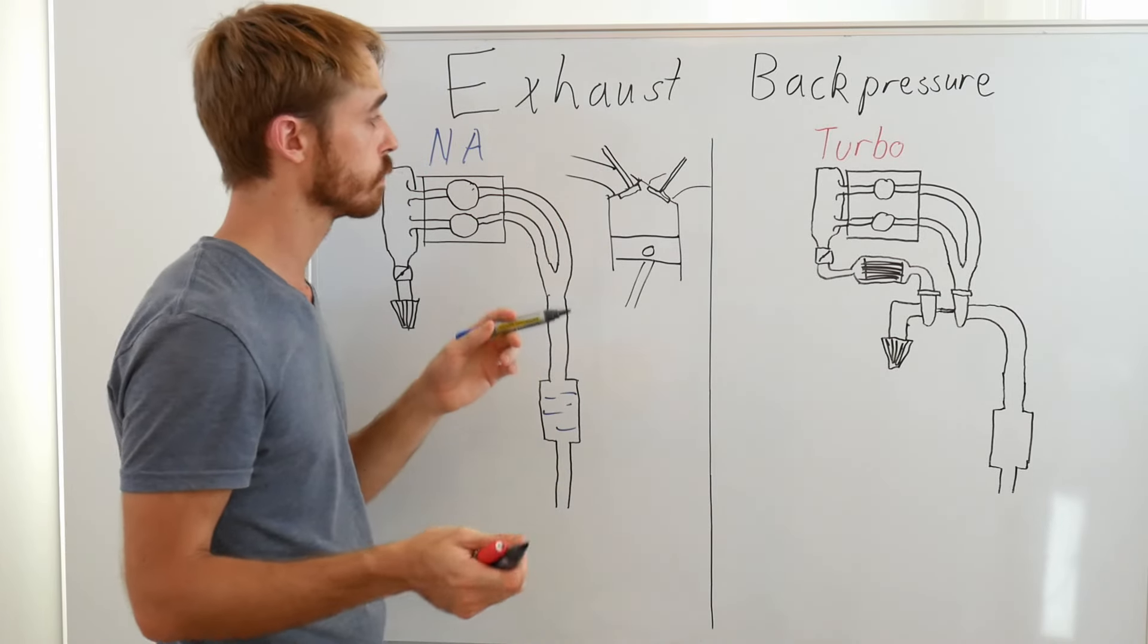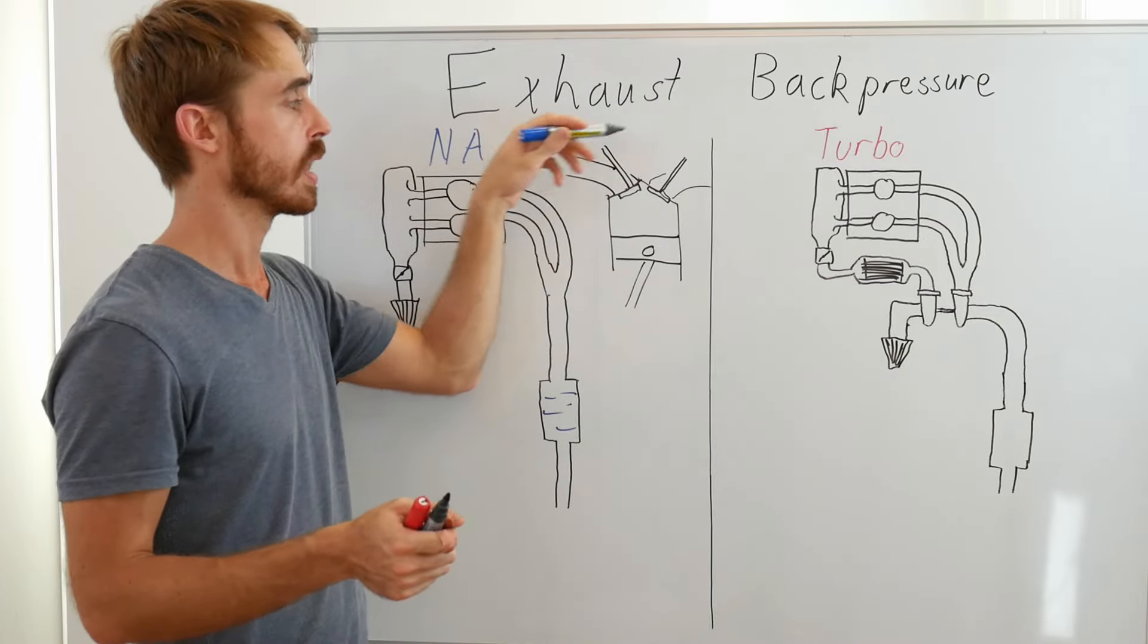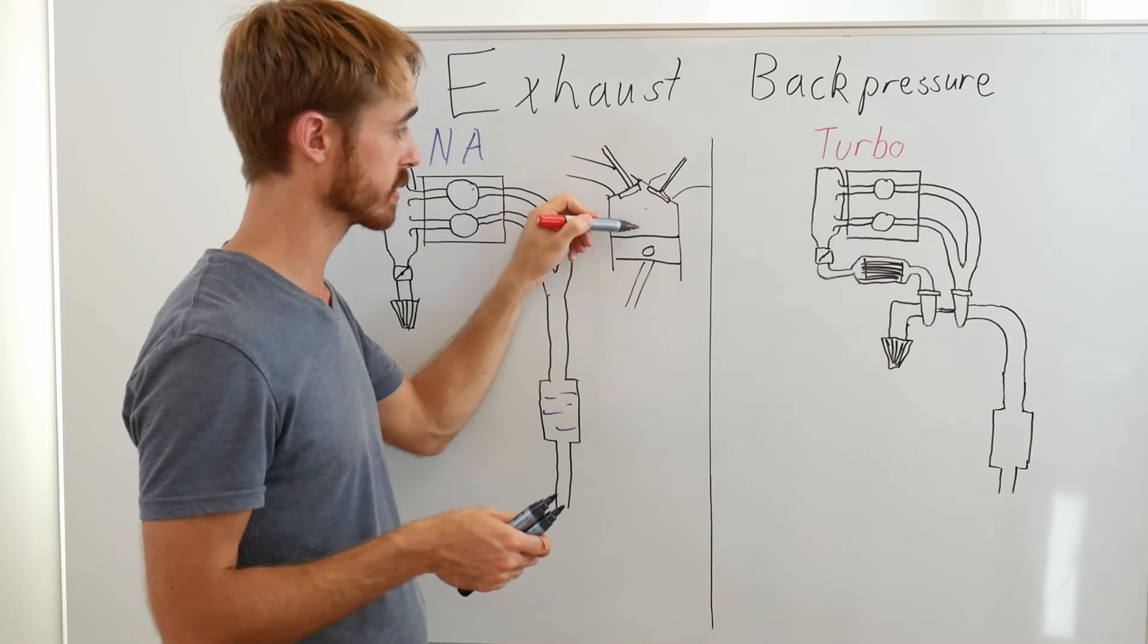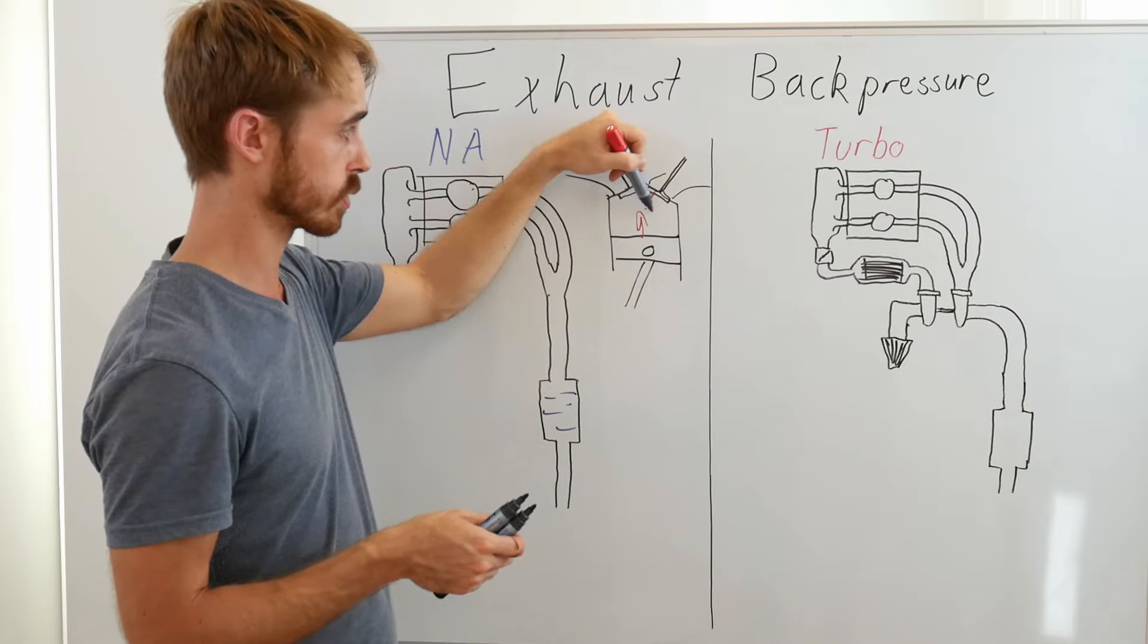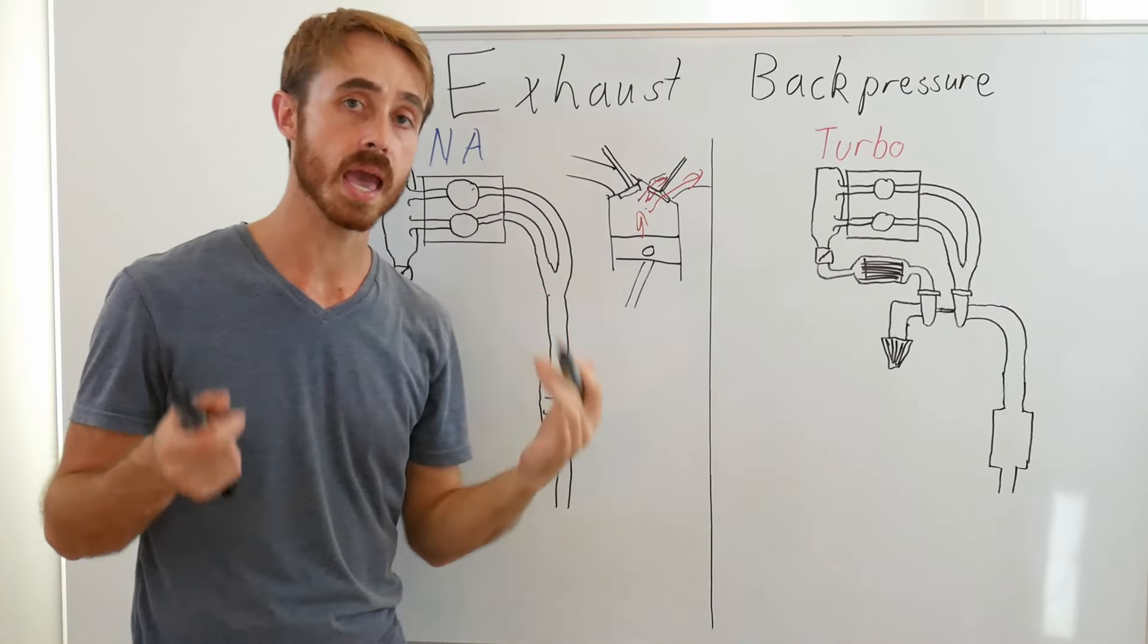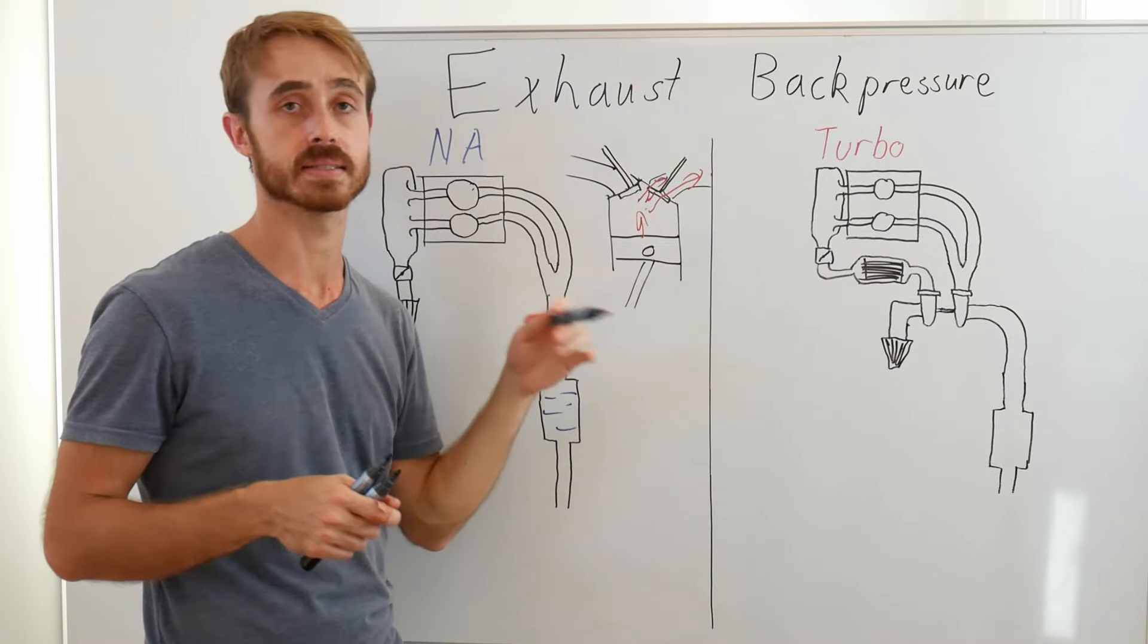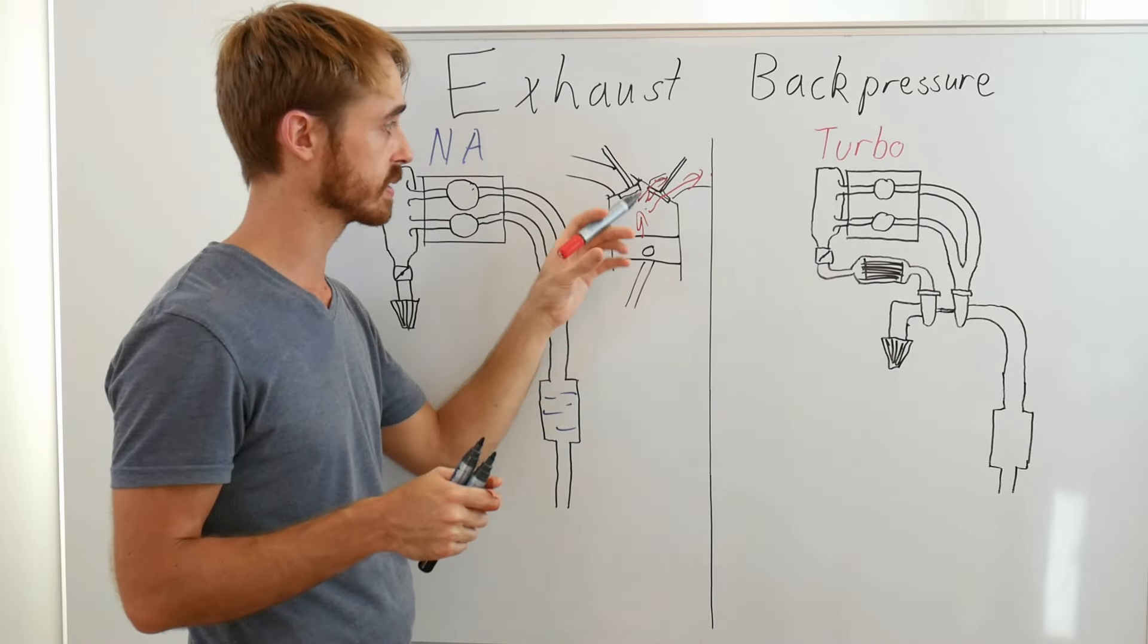So if you imagine our regular four-stroke cycle, we pull our intake air in, we do our combustion, and then we push out our exhaust gases. Now when we're hitting our exhaust stroke and trying to get the exhaust out, the piston is going to be moving up and then this valve will be open and exhaust gas will start to flow out. Now the reason that the air flows out of it is because there's a pressure differential. The pressure is higher in here than it is over here, so the air starts to move. That's what causes the air to accelerate out of the piston.